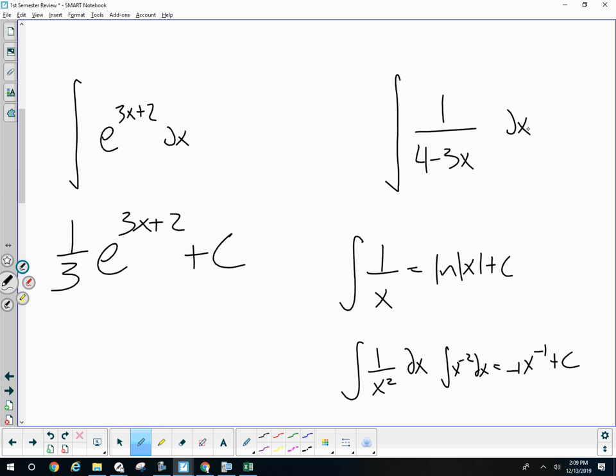If I have 1 over 4 minus 3x, its antiderivative would be log absolute 4 minus 3x plus c. But don't forget a negative one third. It's the coefficient of x. We'll multiply by the reciprocal of the coefficient.